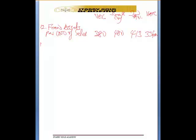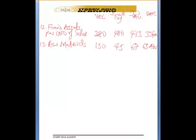For item 13, you're going to have raw materials. Which is 130, and here is 45, here is 67, so you have a difference of 63 — adverse.